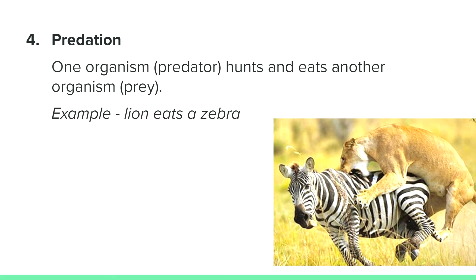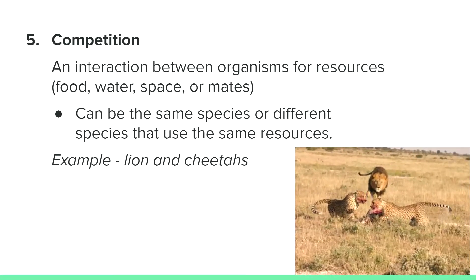Predation is a relationship where one organism, called a predator, hunts and eats another organism called prey. An example of this is the relationship between lions and zebras — one benefits and the other is harmed. Competition is an interaction between organisms for resources such as food, water, space, or mates. This can include individuals of the same species or different species that use the same resources. One example is the relationship between lions and cheetahs; another is humans competing for the last toilet paper roll. This kind of symbiosis can be identified as minus-minus since both organisms expend energy in order to compete.